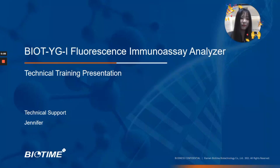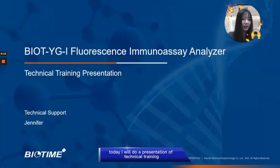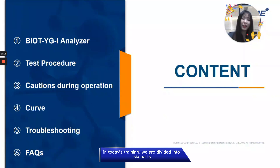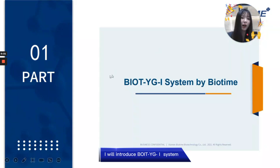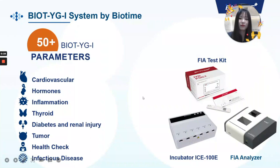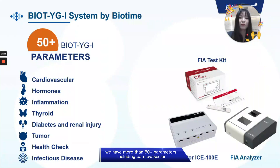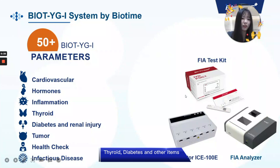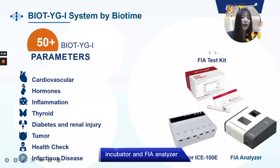Hello everyone, my name is Jennifer and I'm the engineer of BioTran. Today I will do a presentation of technical training. Today's training is divided into six parts. First part, I will introduce the BioYG system. We now have more than 15 parameters including cardiovascular, hormones, inflammation, thyroid, diabetes and other items. The BioYG process system includes FIA test kit, incubator, and FIA analyzer.